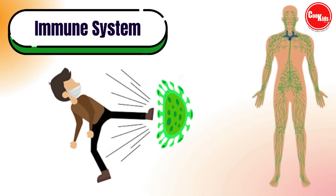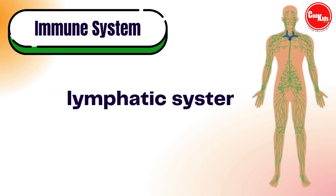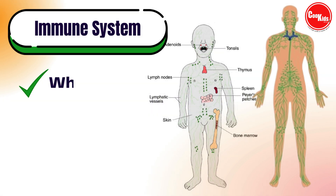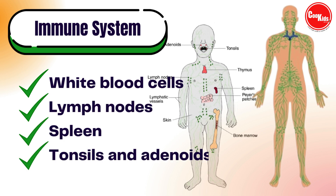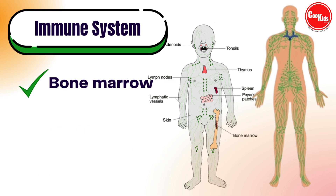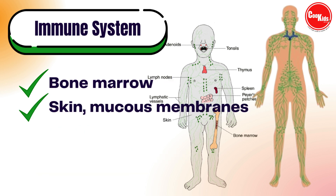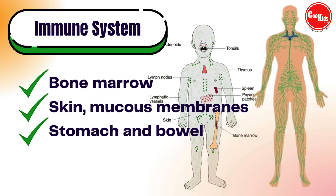The lymphatic system is part of the immune system. It keeps body fluid levels in balance and defends the body against infections. The main parts of the immune system are the white blood cells, lymph nodes, spleen, tonsils and adenoids, thymus, bone marrow, skin, mucous membrane, stomach, and bowel.